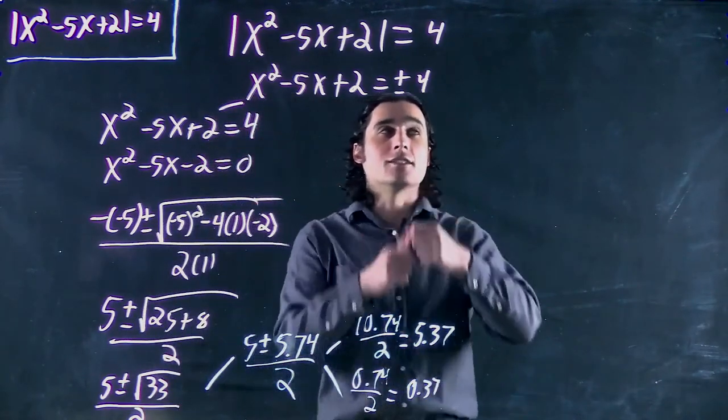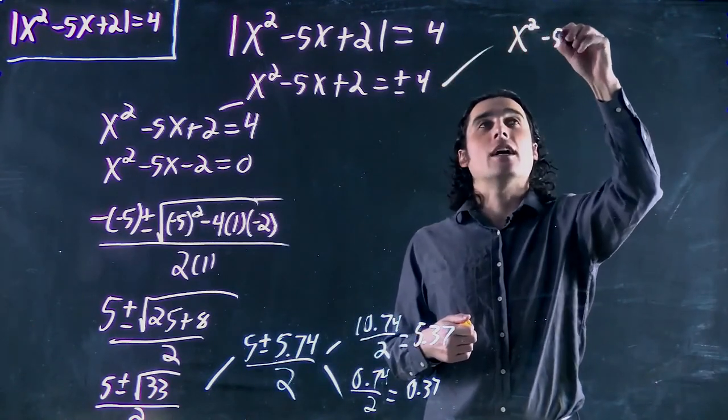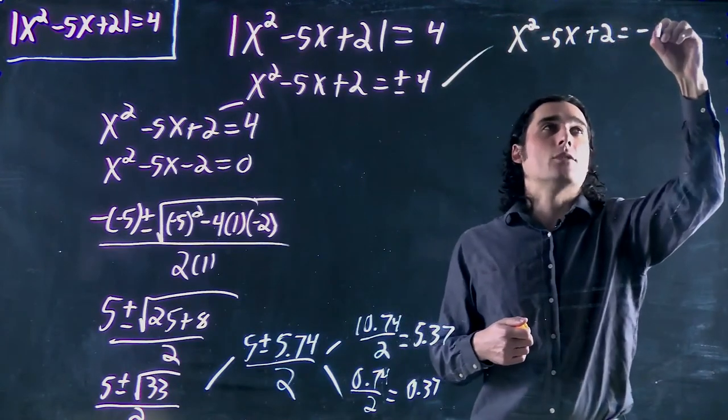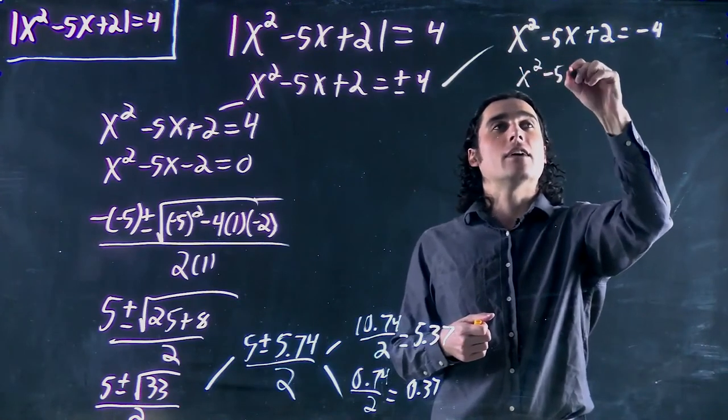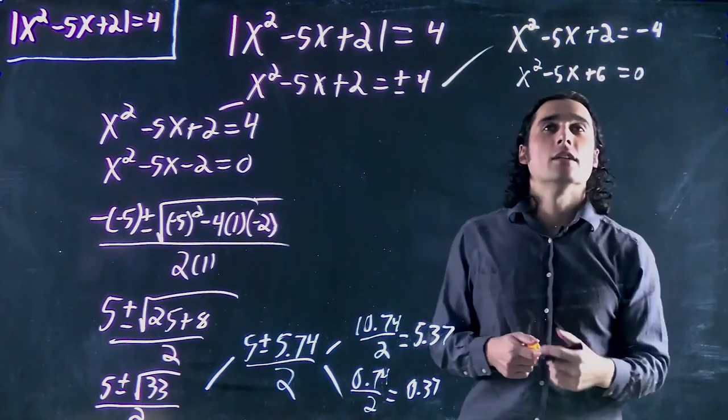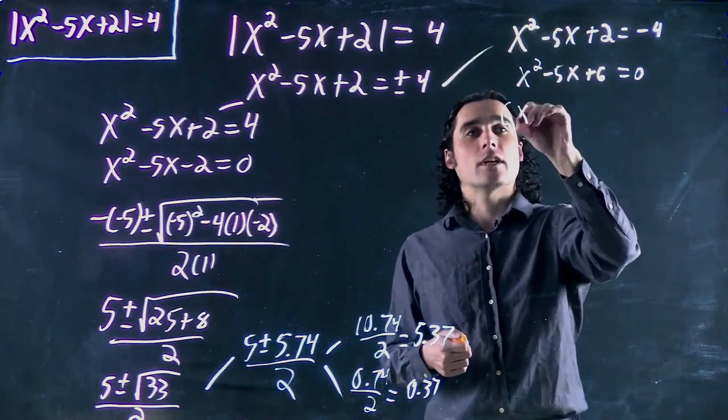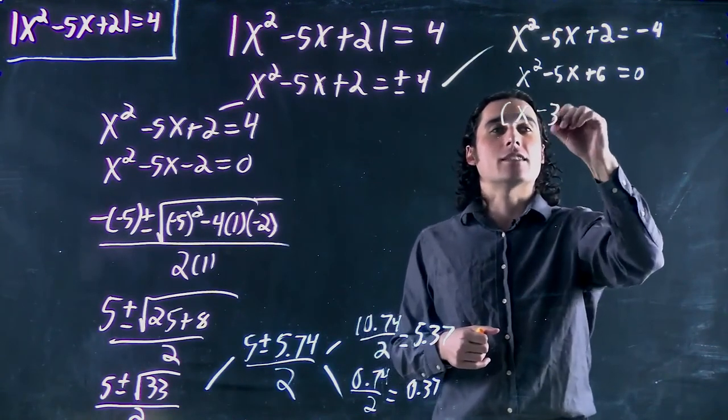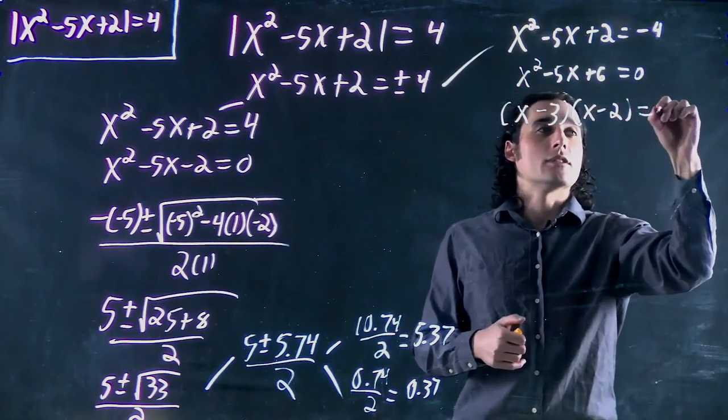Now let's consider the other case. We've got x squared minus 5x plus 2 equals minus 4 now. Great. x squared minus 5x plus 6 equals 0. And this time we look, and thankfully this is factorable. So what we can write this as is x minus 3 and x minus 2 equals 0.